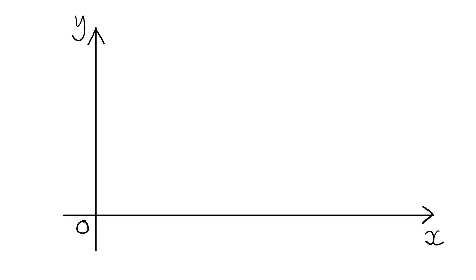Let's do a recap on how the Cartesian plane looks like. It comprises of the x-axis, the y-axis, and the origin. Next, we're going to see how a point will look like on the Cartesian plane.